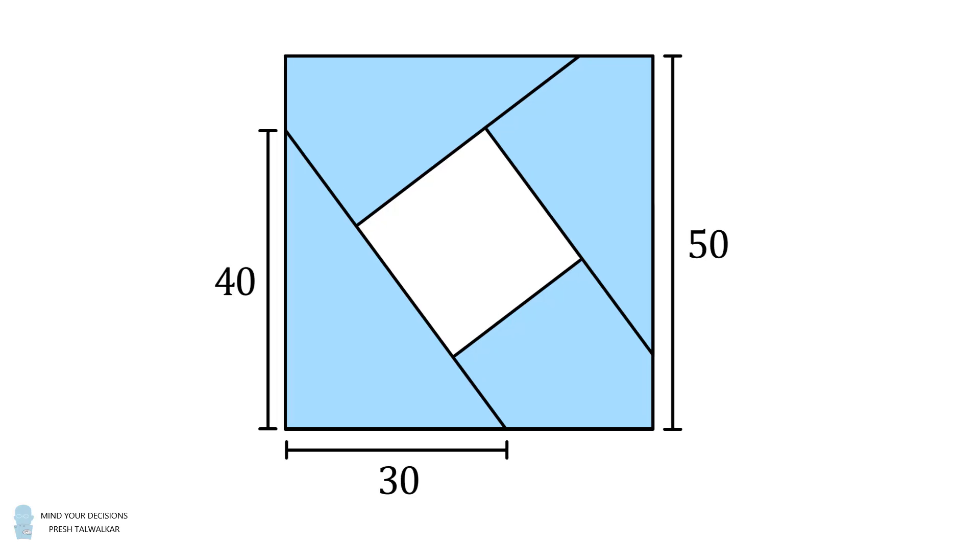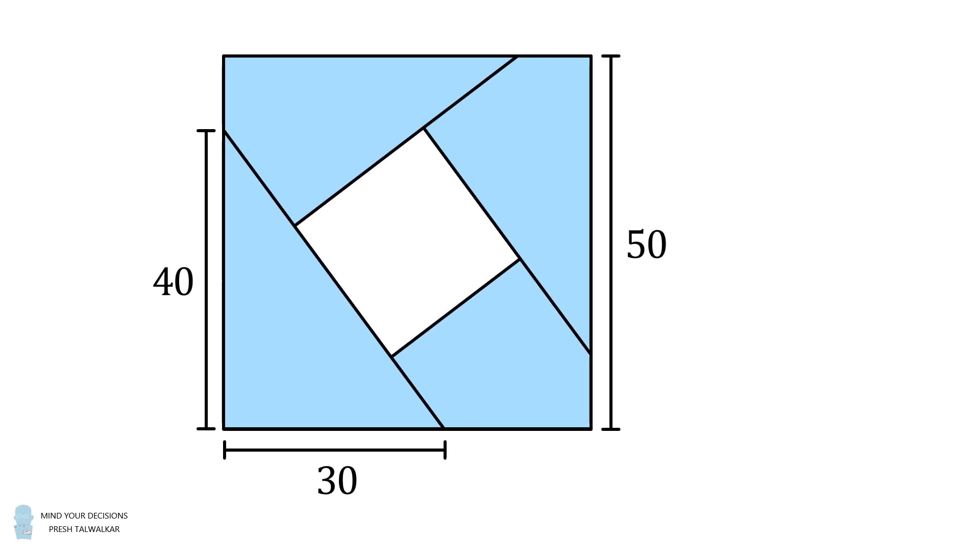The triangles do overlap each other. The question is what portion of the square is not covered by the four triangles? In other words, what is the area of the region shaded in green?